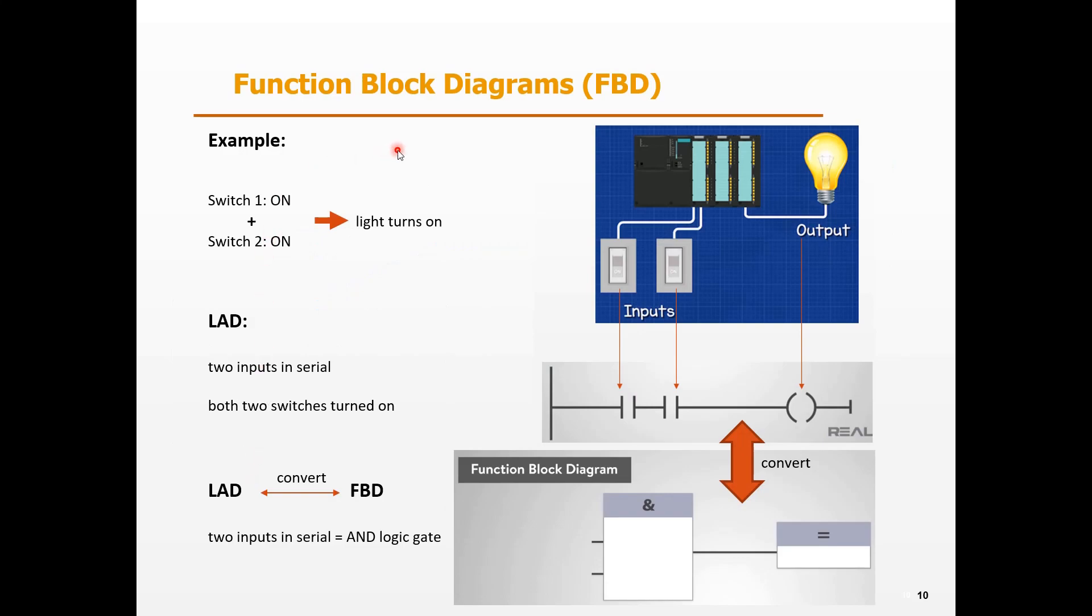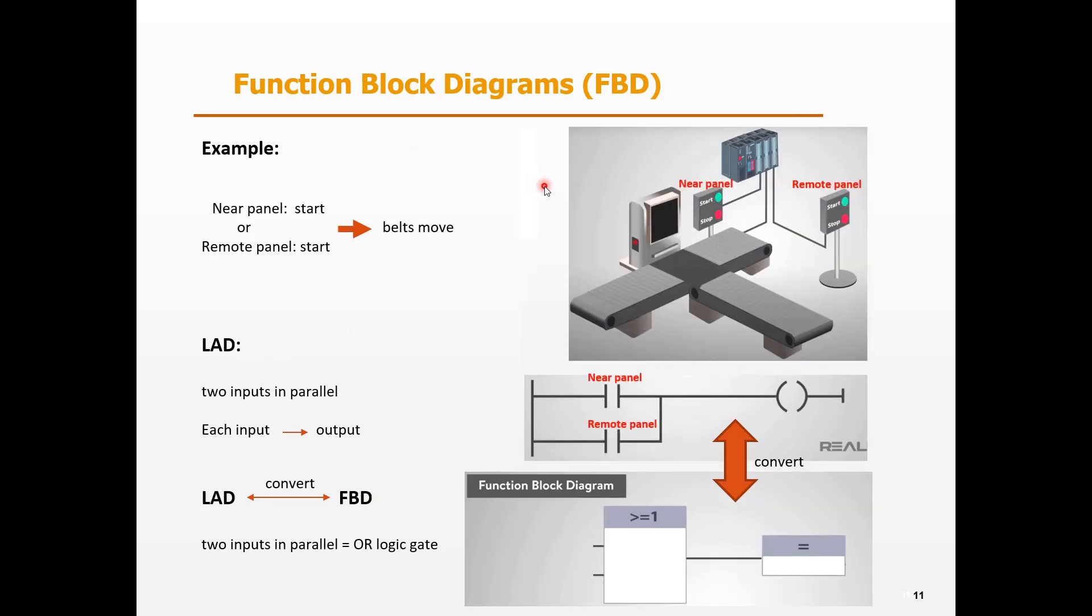FBD and LAD can convert to each other. For the previous example of LAD, when both two switches are turned on, the light is turned on. We can convert the LAD to FBD and logic gate. Next example also follows the previous example of LAD. There are two control panels. Each panel can start the belts individually. We can convert the LAD to FBD or logic gate.